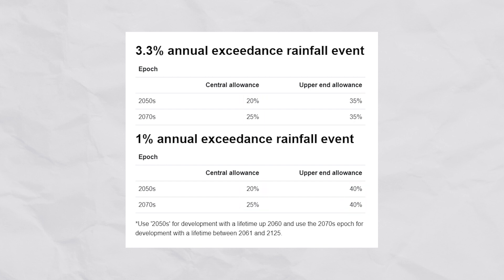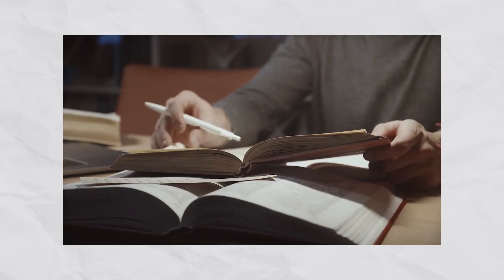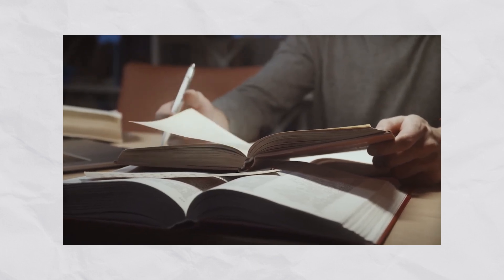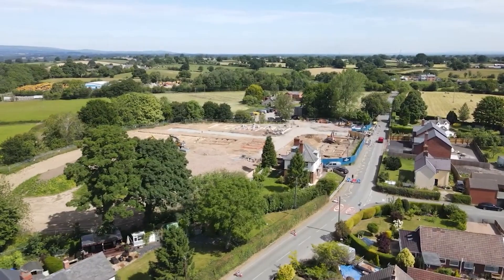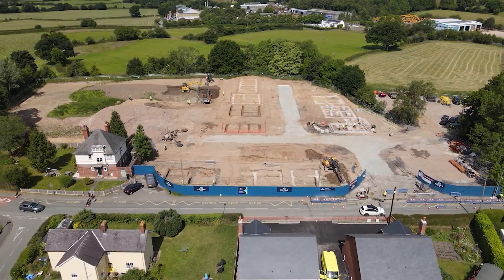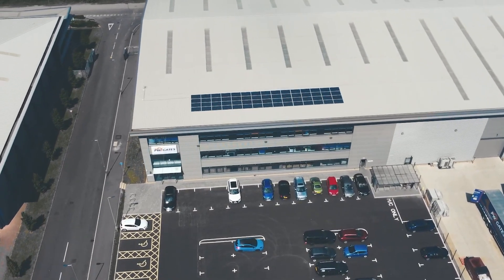The key criteria for selecting the right allowance is the development lifetime. The EA climate change guidance references development lifetime guidance to work out the lifetime of your development — though this specific guidance document can be difficult to locate. Residential developments should have a minimum of 100 years and industrial units should have 50 years.